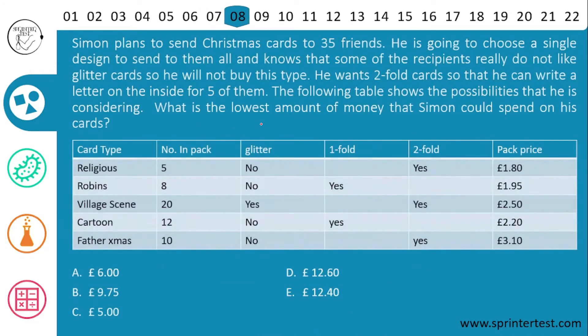Moving to the next question. Simon plans to send Christmas cards to 35 friends. He is going to choose a single design to send to them all and knows that some of the recipients really do not like glitter cards, so he will not buy that type. He wants 2-fold cards so that he can write a letter on the inside for 5 of them. The following table shows the possibilities he is considering. What is the lowest amount of money that Simon could spend on his cards?